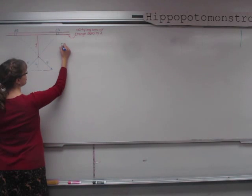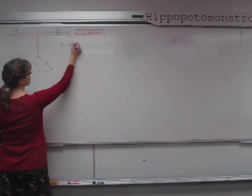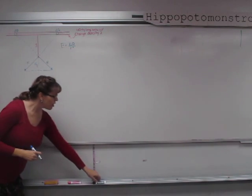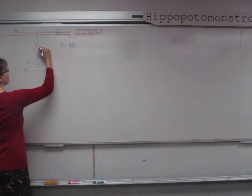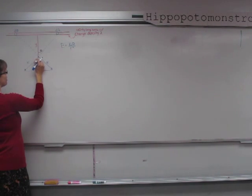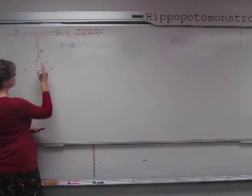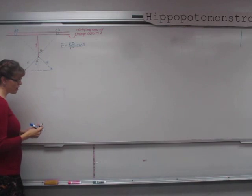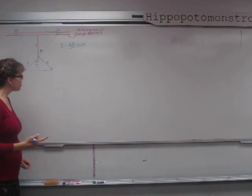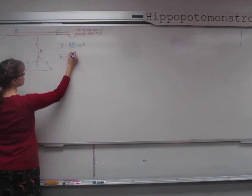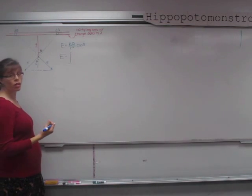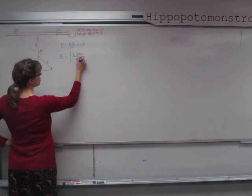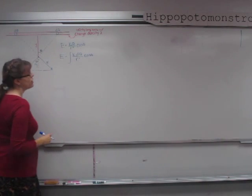Since we're adding little tiny point charges, we use Coulomb's law: the electric field equals k·q over r². Since we're only interested in the y-components, we mark an angle theta, and take cosine theta for the vertical component. So the electric field equals the integral of k·dq over r² times cosine theta.